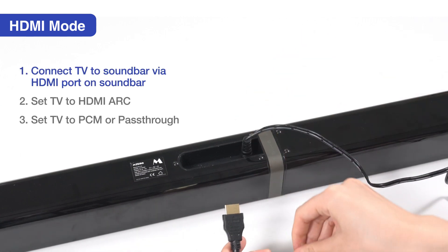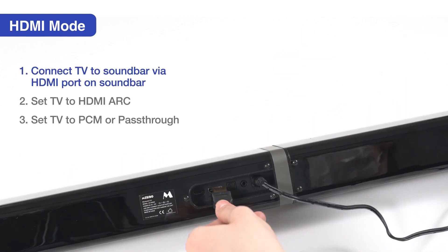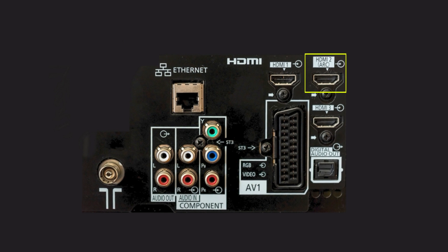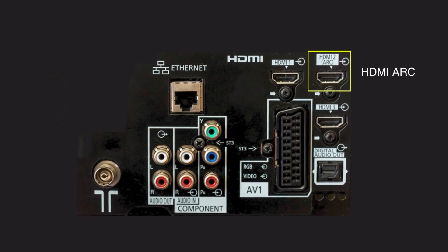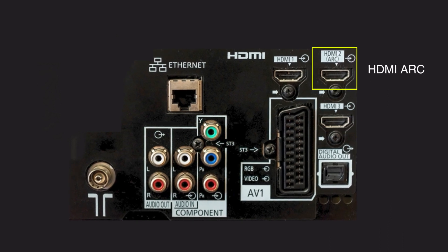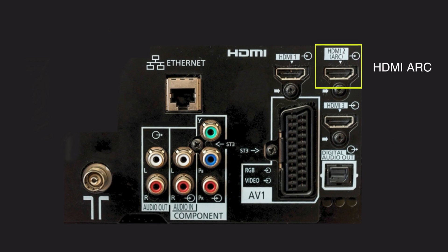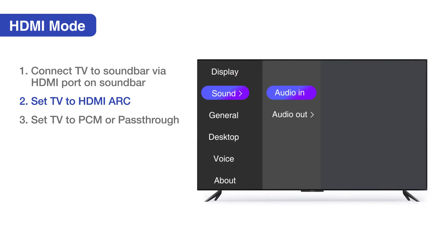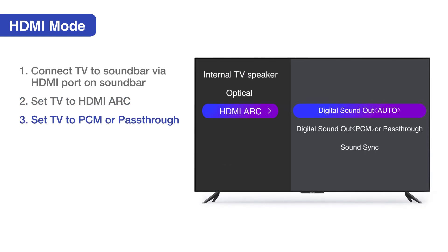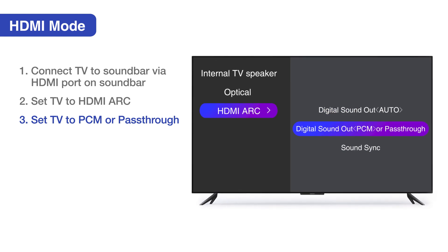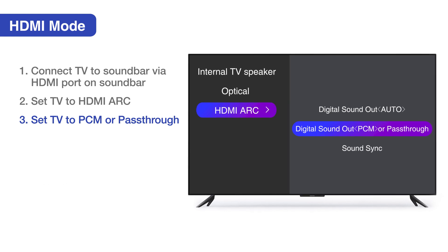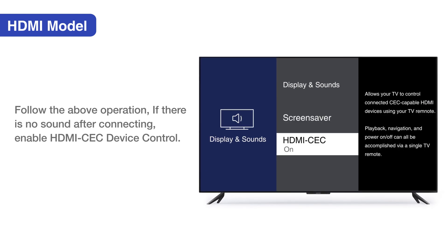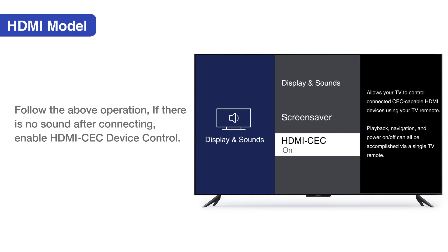HDMI mode. Remove the plastic cap on both ends of the HDMI cable. Insert one end of the cable into the HDMI port located on the back of the soundbar. Next, insert the other end of the HDMI cable into your TV's HDMI ARC port. HDMI works with HDMI ARC ports only. If your TV does not have HDMI ARC, use an optical cable. After connection, go to your TV's settings and find the digital sound out or digital audio format settings, then select PCM or pass-through. If there is no sound after following the HDMI connection instructions, go to your TV's settings and enable HDMI CEC device control.